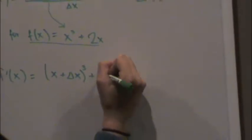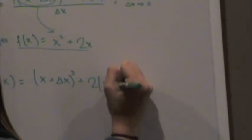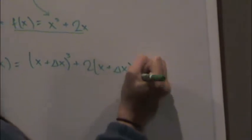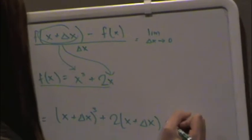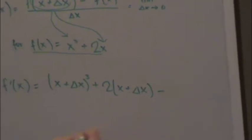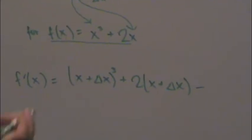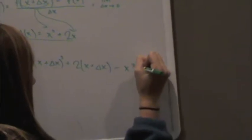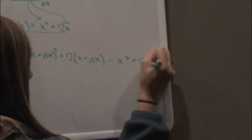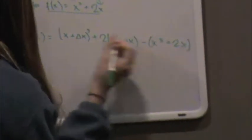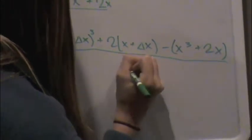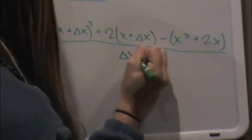And then plus 2 times x plus the change in x. So we're plugging this in here as well. And then minus f at x, and f at x is x cubed plus 2x. And then all of this goes over the change in x.